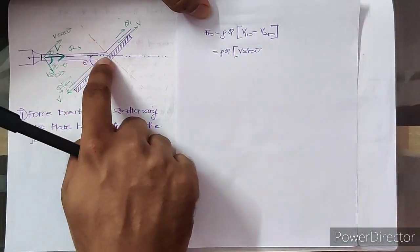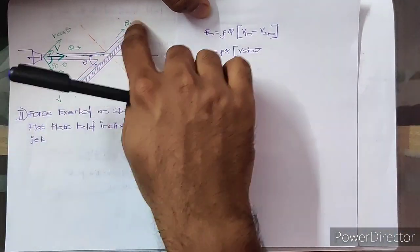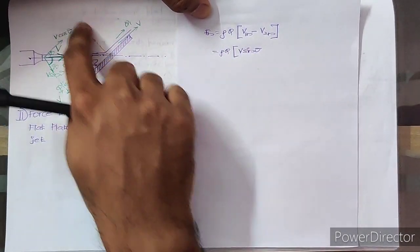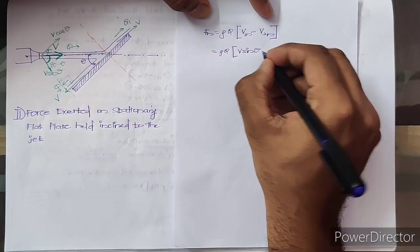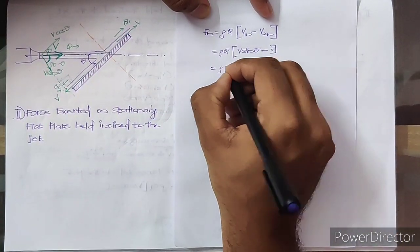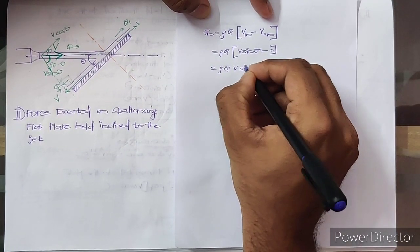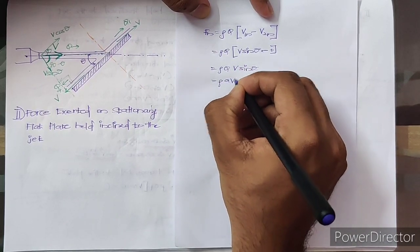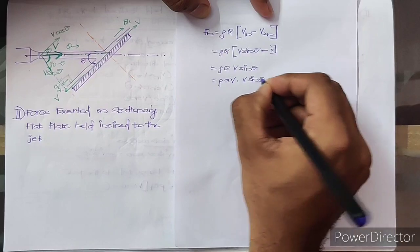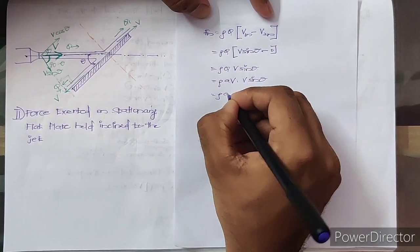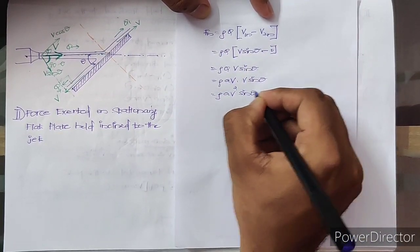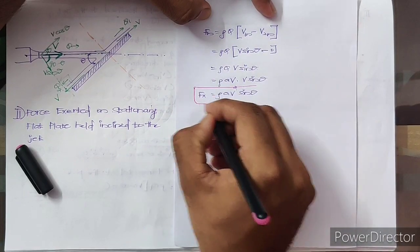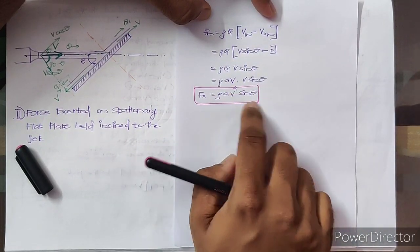After impact, both parts of the flow move tangentially along the plate, so their velocity component normal to the plane is zero. Therefore the normal force is: Fn = ρ·Q·(V·sinθ − 0). Since Q = A·V, this becomes Fn = ρ·A·V²·sinθ. That is how you calculate the force in the normal direction — Fn = ρ·A·V²·sinθ.